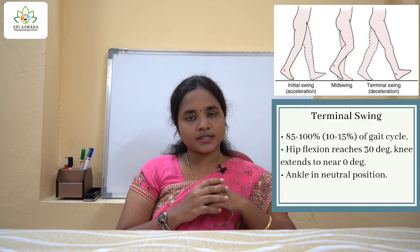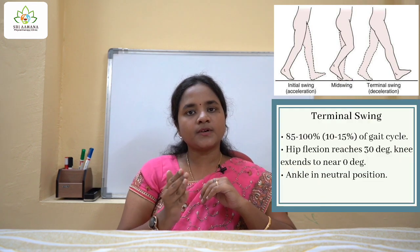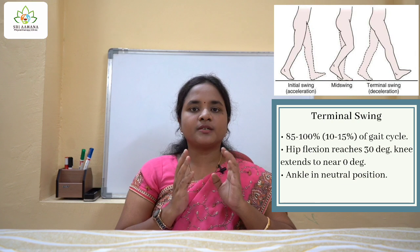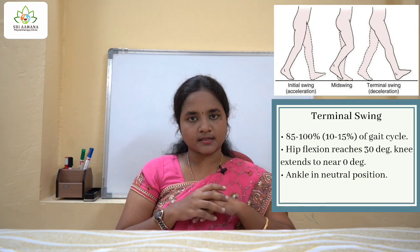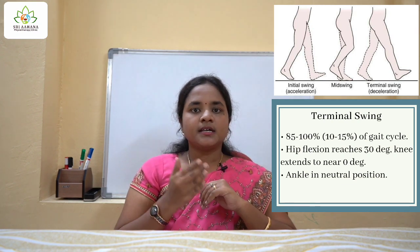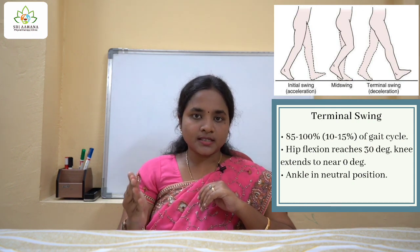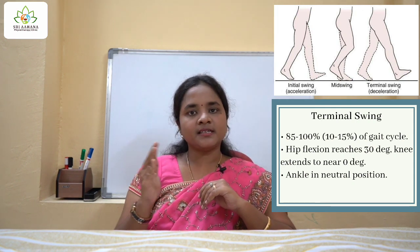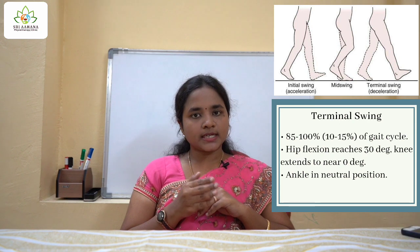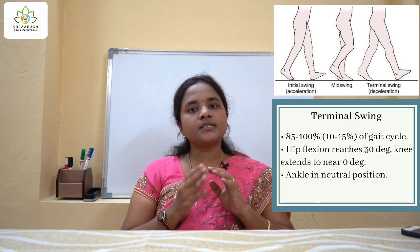The next is the late swing or terminal swing phase, which contributes around 85 to 100% of the remaining 40% of the gait cycle. In this phase, it starts at the deceleration of the leg and continues till the next heel strike. This is called the decelerating phase or the terminal swing phase. I hope the phases of the swing phase would have been clear to you all.